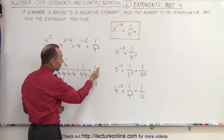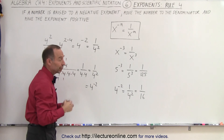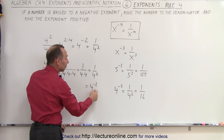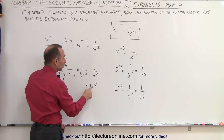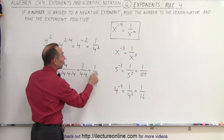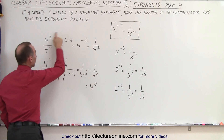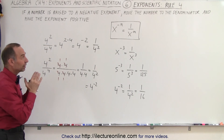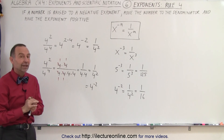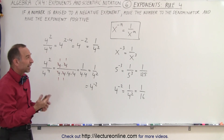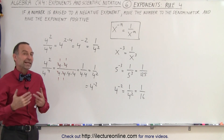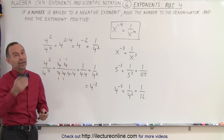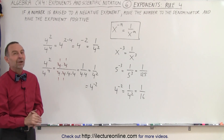We can move it back to the numerator and make it negative, because if we can write it one way, we can write it the other. So 4 to the negative 2 power must equal 1 over 4 squared, because these things are the same. Therefore, that rule is indeed valid. Whenever we have a negative exponent, it's easier to move the number to the denominator and make it a positive exponent. And that's how it's done.